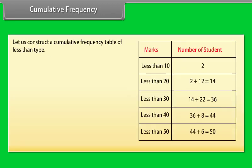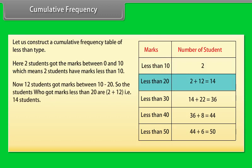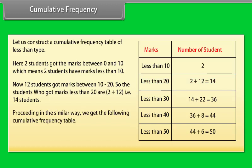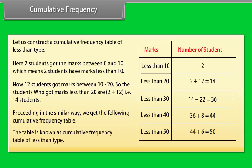Let us construct a cumulative frequency table of less than type. Two students got marks between 0 and 10, which means two students have marks less than 10. Now 12 students got marks between 10 to 20, so students who got marks less than 20 are 2 plus 12, that is 14. Proceeding similarly: less than 10 → 2; less than 20 → 14; less than 30 → 14 + 22 = 36; less than 40 → 36 + 8 = 44; less than 50 → 44 + 6 = 50. This table is known as the cumulative frequency table of less than type.